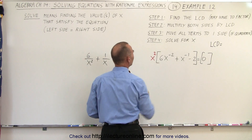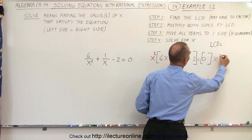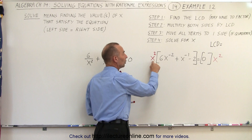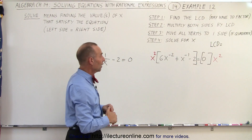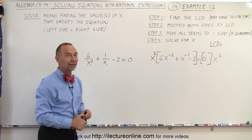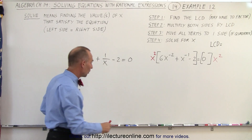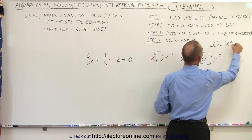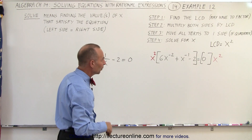with x to the positive 2 power, and the same on this side, x to the positive 2 power. Now, if this was 6x to the minus 3, you would multiply both sides by x to the positive third power. And essentially, you're doing what you would do in the first place — find the lowest common denominator, which is x squared, and then multiply both sides by the lowest common denominator. So you can just kind of do that all in one step.